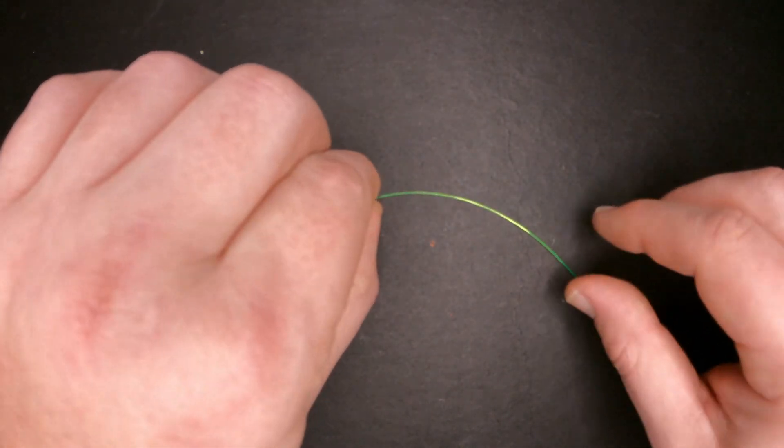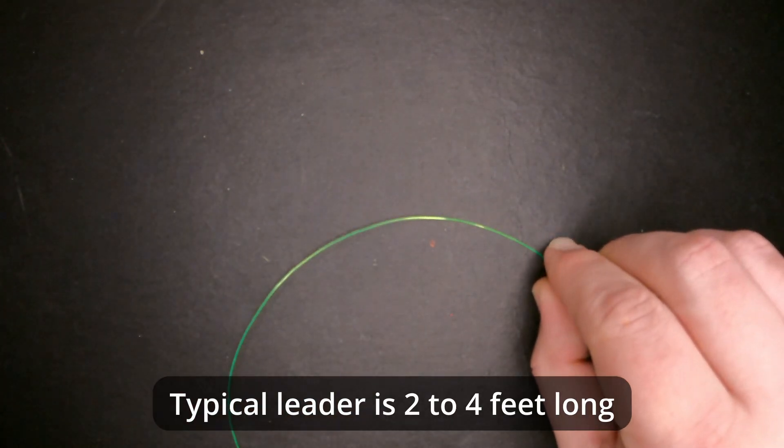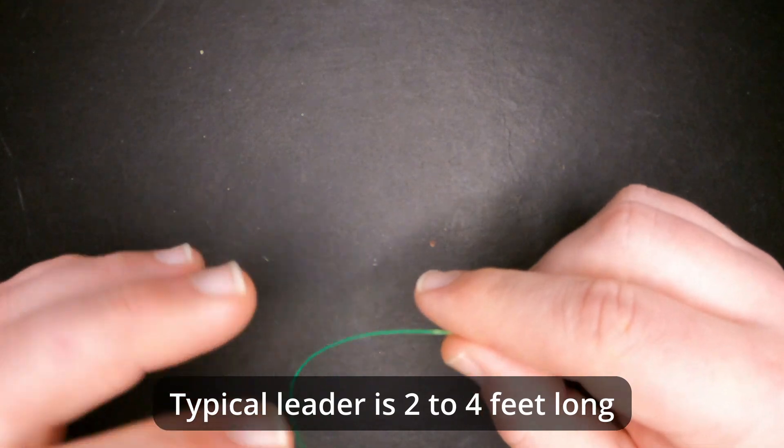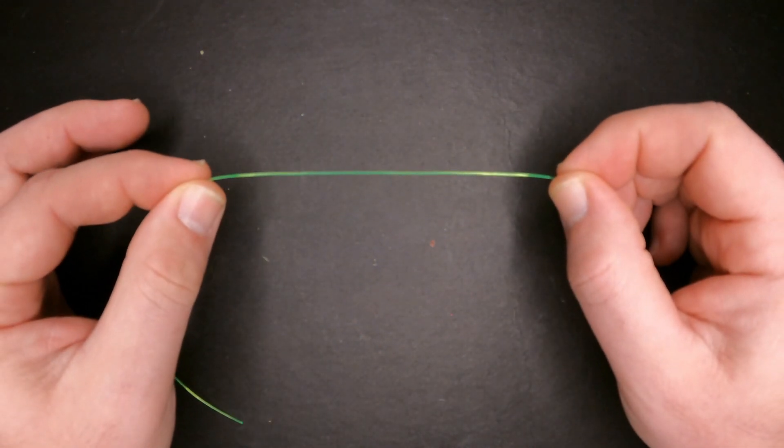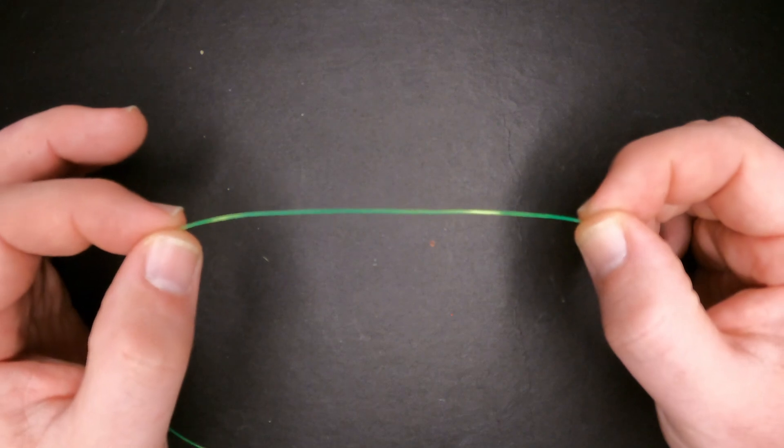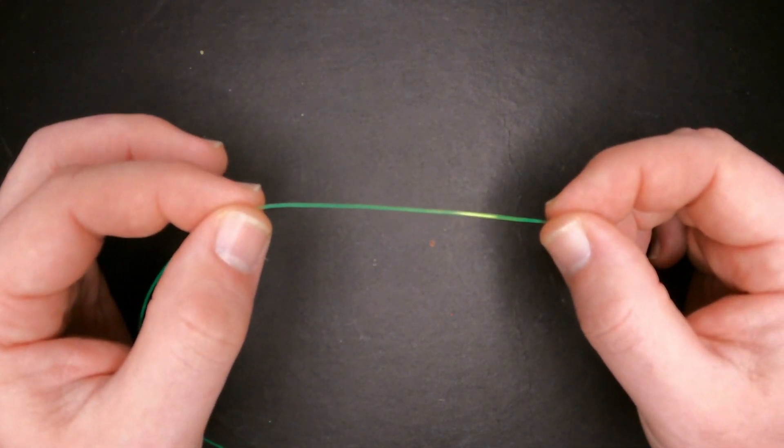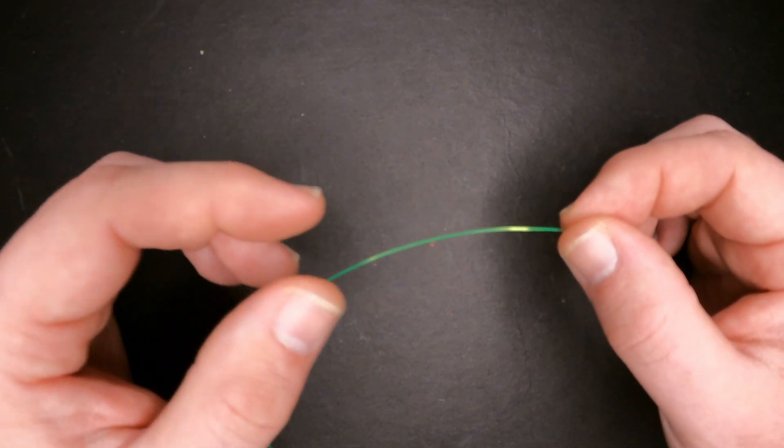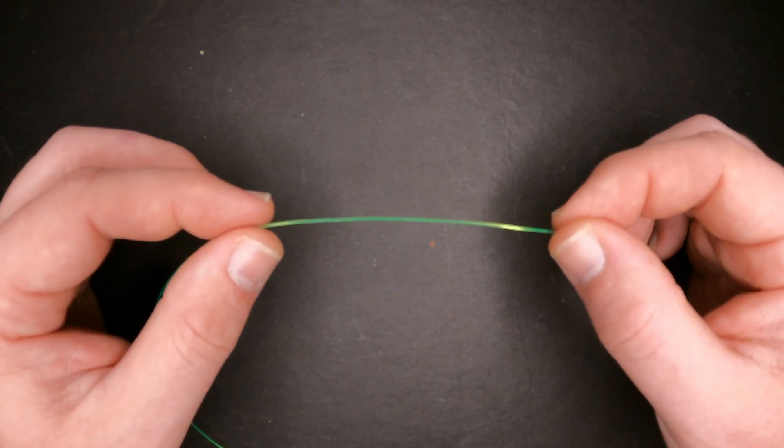I'm going to start out with the leader. I've got a two to two and a half foot section of fluorocarbon right here that's 30 pounds. Now this 30 pound fluorocarbon is going to be weaker than my main line because if this rig ever gets hung up on a tree or a rock and they need to break it free, theoretically this weaker line should break before the main line and at least I can save my lead.